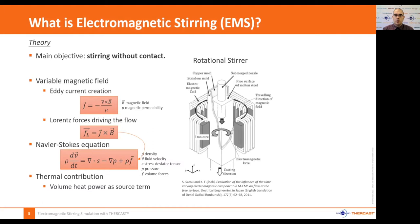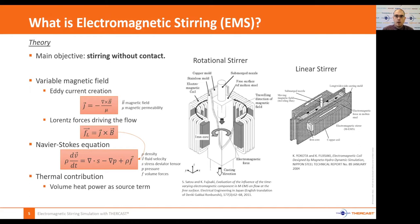Rotational stirrers create a rotating magnetic field that induces torque in the section of the billet and therefore puts the fluid in motion around the casting axis. There are also linear stirrers that create magnetic fields that flow along the stirrer and put fluid into motion within the slab.